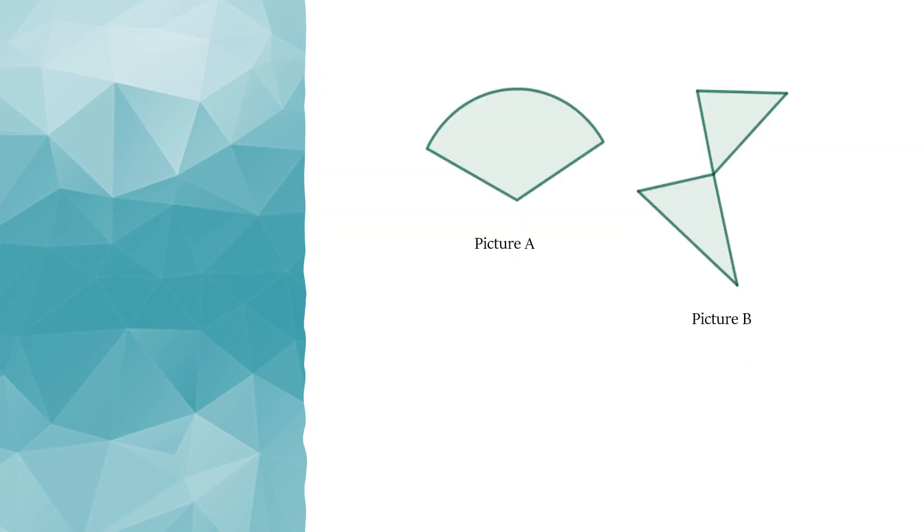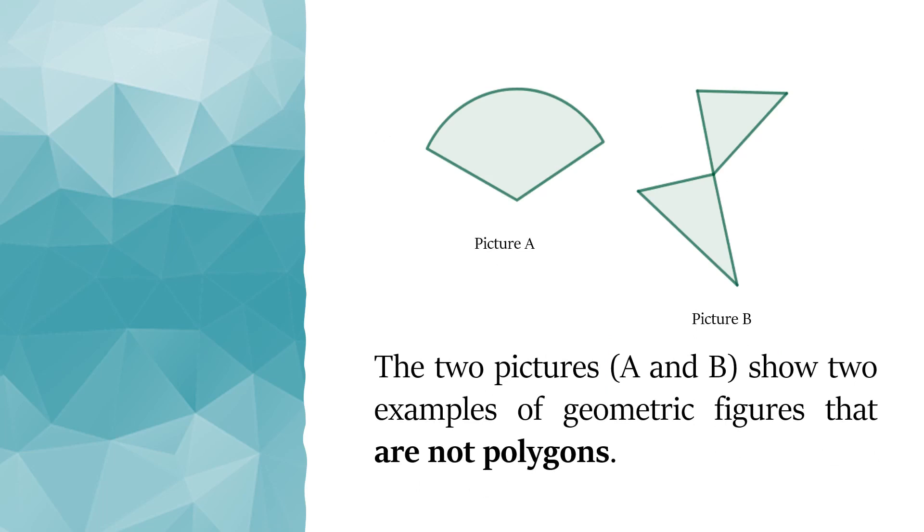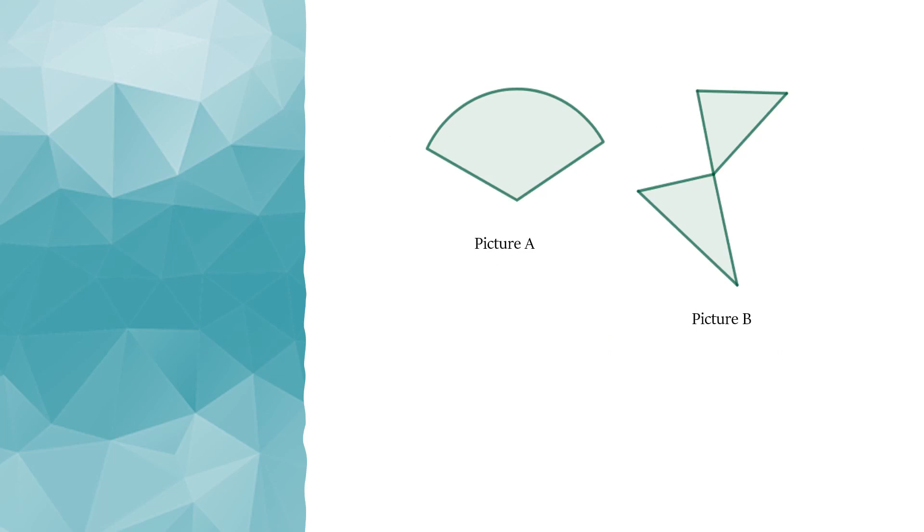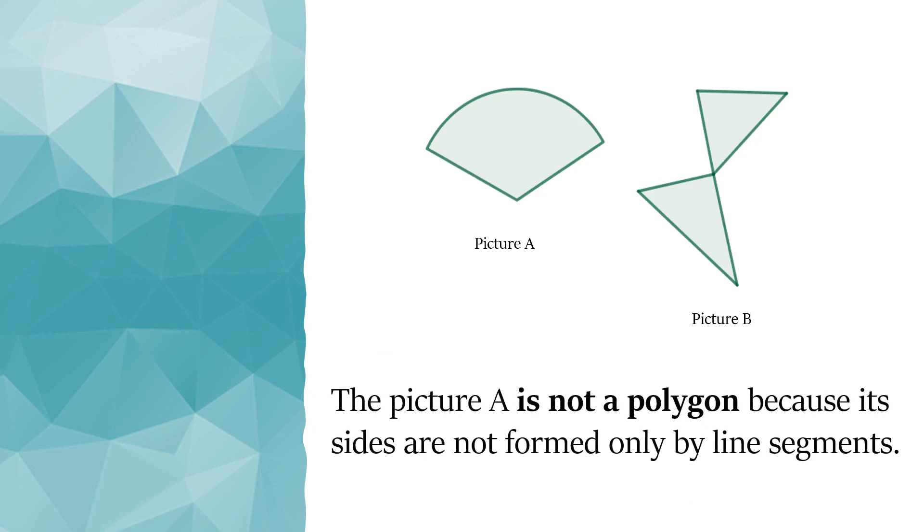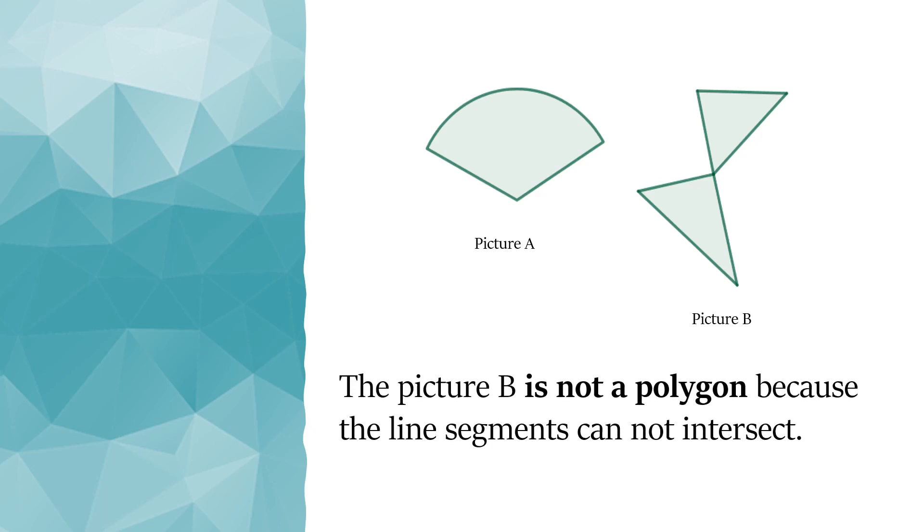The picture above shows two examples of geometric figures that are not polygons. Picture A is not a polygon because its sides are not formed only by line segments. Picture B is not a polygon because the line segments cannot intersect.